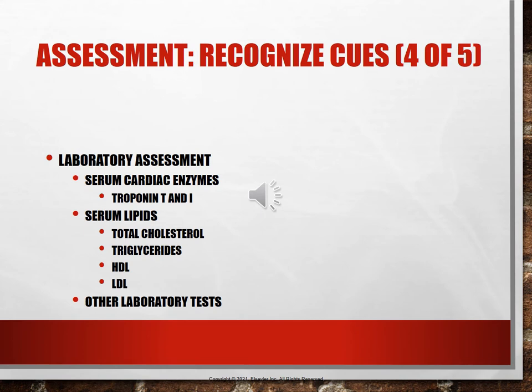For laboratory assessment, serum markers can be obtained quickly with results back in 15 to 20 minutes. Serial cardiac enzymes are repeated every three to six hours to look at the trend — once levels rise, we need to see them come down to know the myocardium is no longer ischemic. Troponin T and troponin I are the most important cardiac markers. You should not see any troponin at all in a healthy adult.